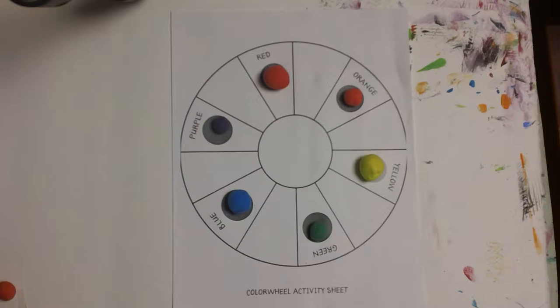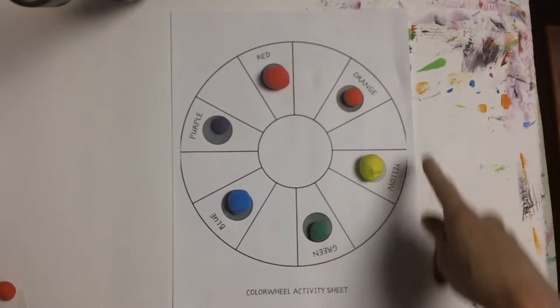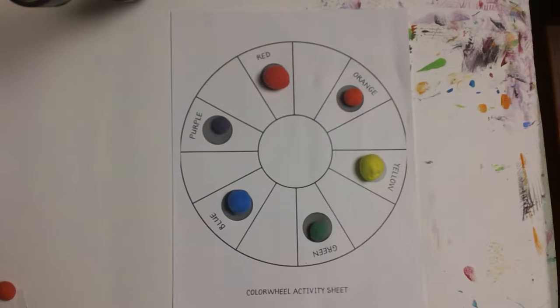Okay Kindergarteners, we're back. Hopefully you have all of your balls of colorful clay made and sitting there. Now what we're going to do is make a colorful caterpillar and turn that caterpillar into a snail.